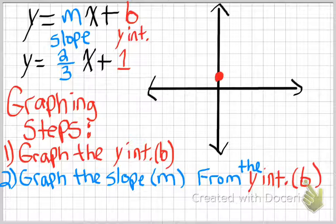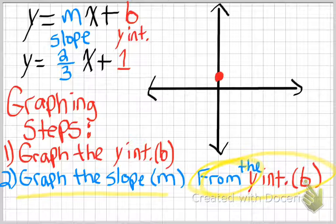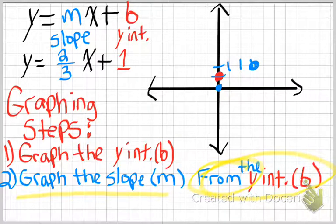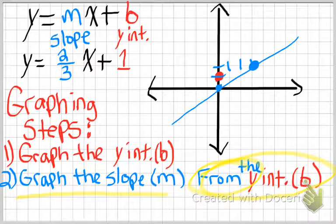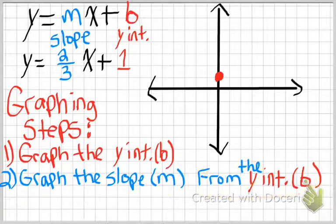Now step two is important — this is a common mistake students make. It says graph the slope, but here's the key part people always mess up: it must be from the y-intercept. Here's what people normally do wrong: they go from the origin and go up 2, over 3, and put a dot right there. They think they're done graphing the slope, but they forgot 'from the y-intercept.' That's the biggest mistake students make when doing this, so I'm going to help you avoid it.